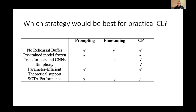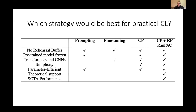Coming back to the strategy comparison table: in my view, based on the RANDFACK results, the class prototype approach would be my choice. We argue it is a simple method applicable to both transformers and CNNs — there are CNN results in the paper's appendix — it has theoretical support, and it shows the best performance across all eight datasets considered in the paper.